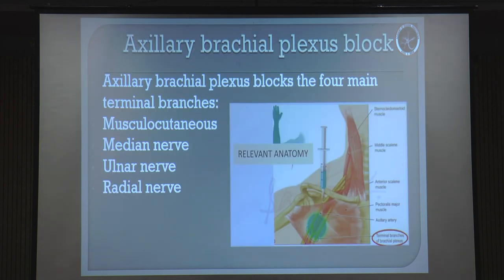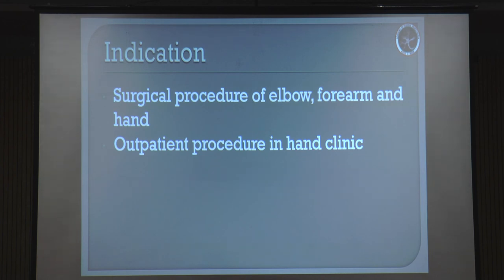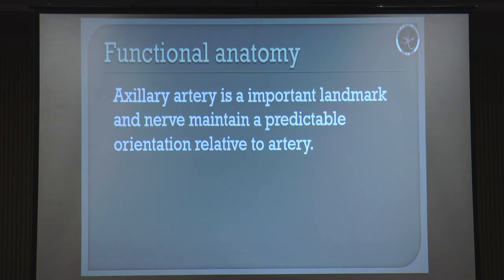Now coming to the axillary brachial plexus block. I hope the concept of infraclavicular is somewhat clear - obviously in 20 minutes you can't explain everything, and I tried to limit to the very tactical points. The axillary brachial plexus block, as you saw yesterday, is the blockade of the musculocutaneous, ulnar, radial, and median nerves. Any surgery below the elbow, you can go for the axillary brachial plexus block. The most important landmark is the axillary artery.